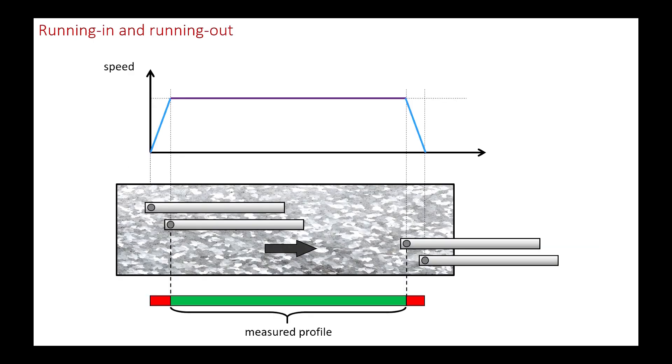Like any movement, the sensor cannot instantly reach its cruising speed. There is therefore an acceleration phase during which the displacement is not linear, so the spacing between the points is not regular. This is called the pre-travel, which is usually suppressed by the profilometer software. But it is nevertheless necessary to take this space into account on the sample, which can sometimes be a problem with small parts.